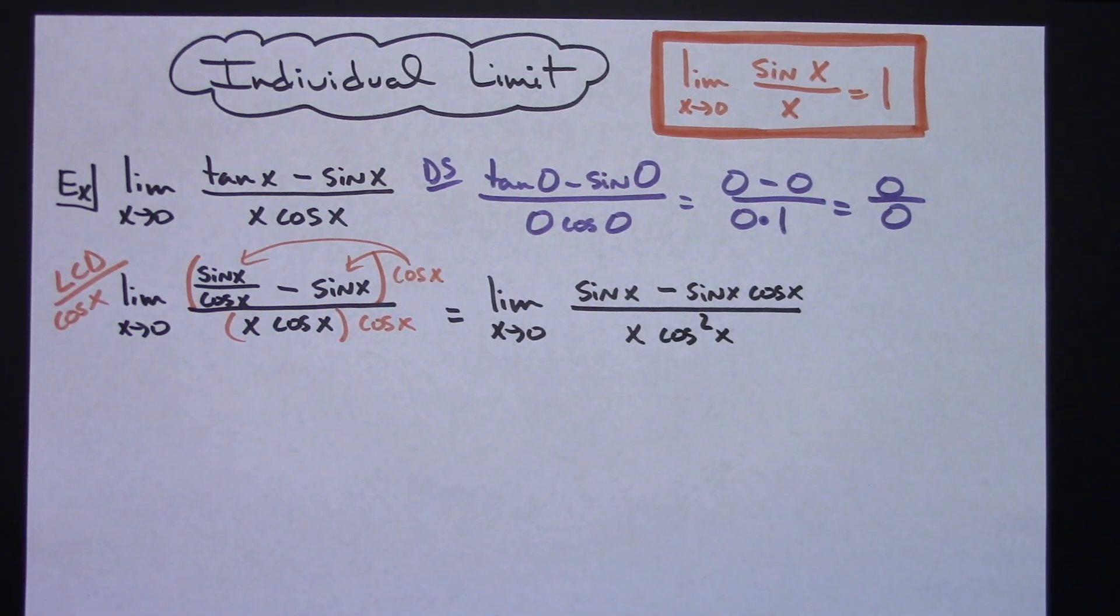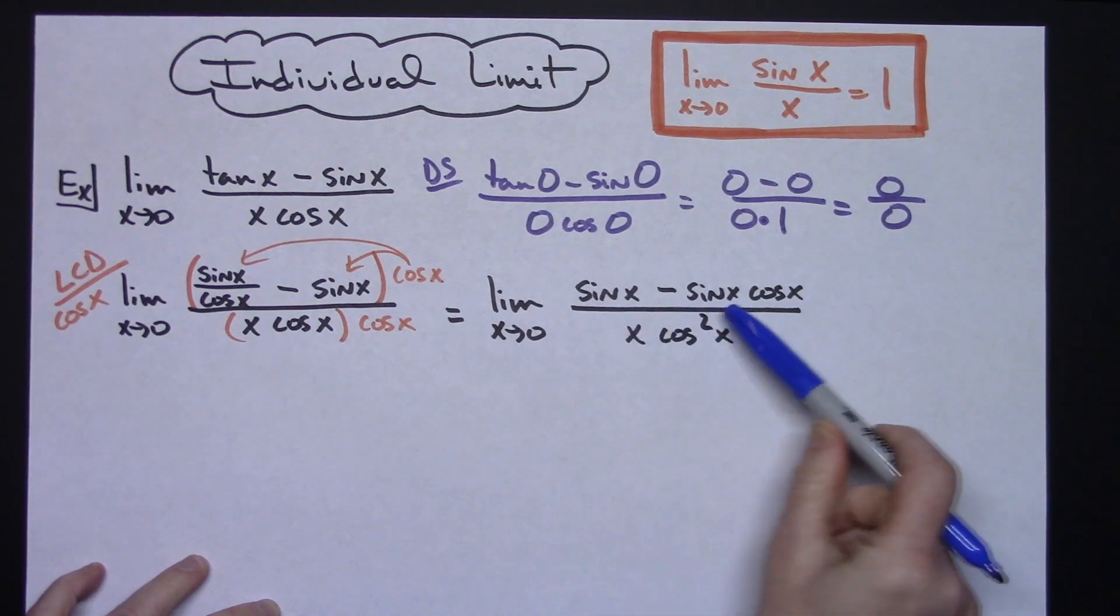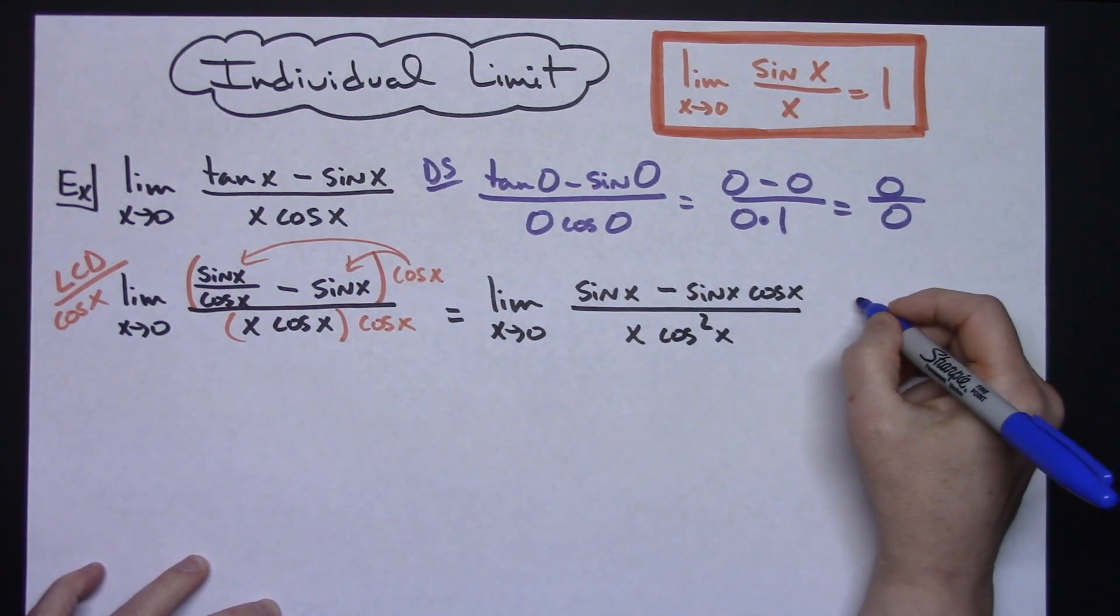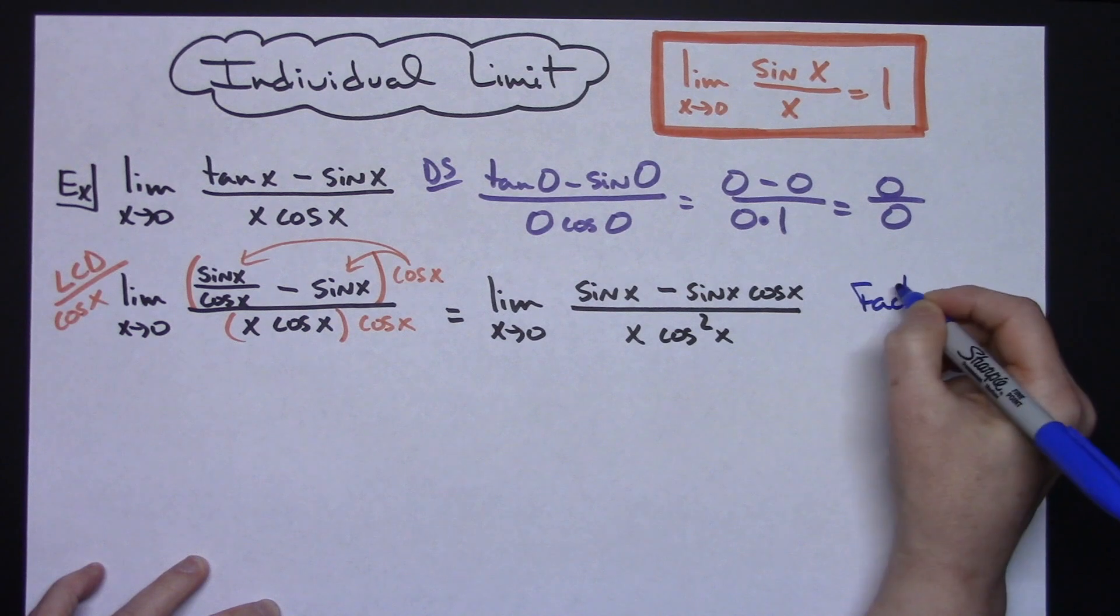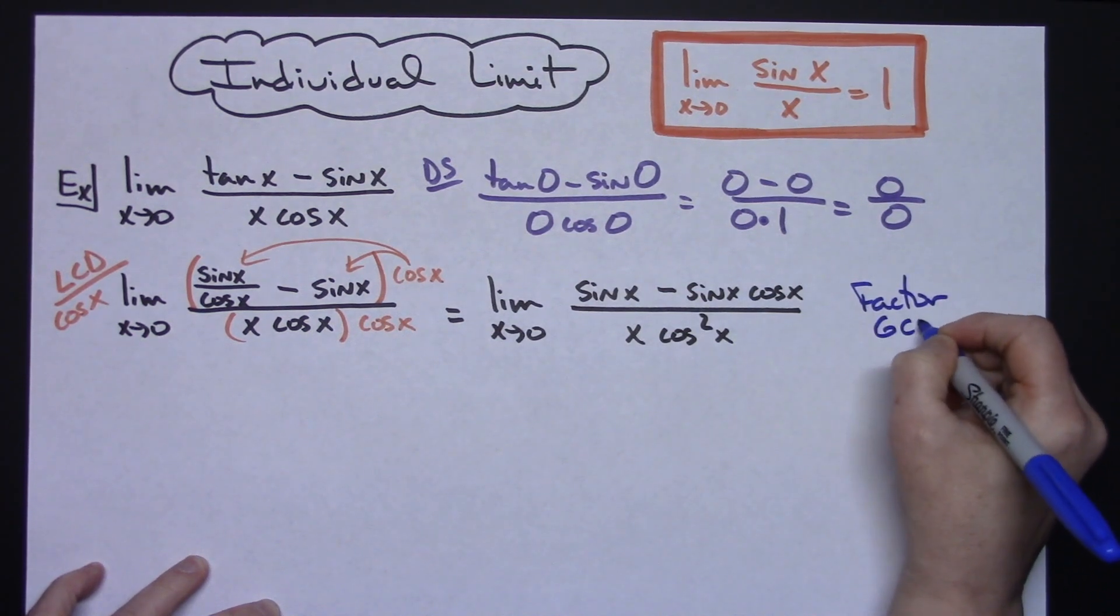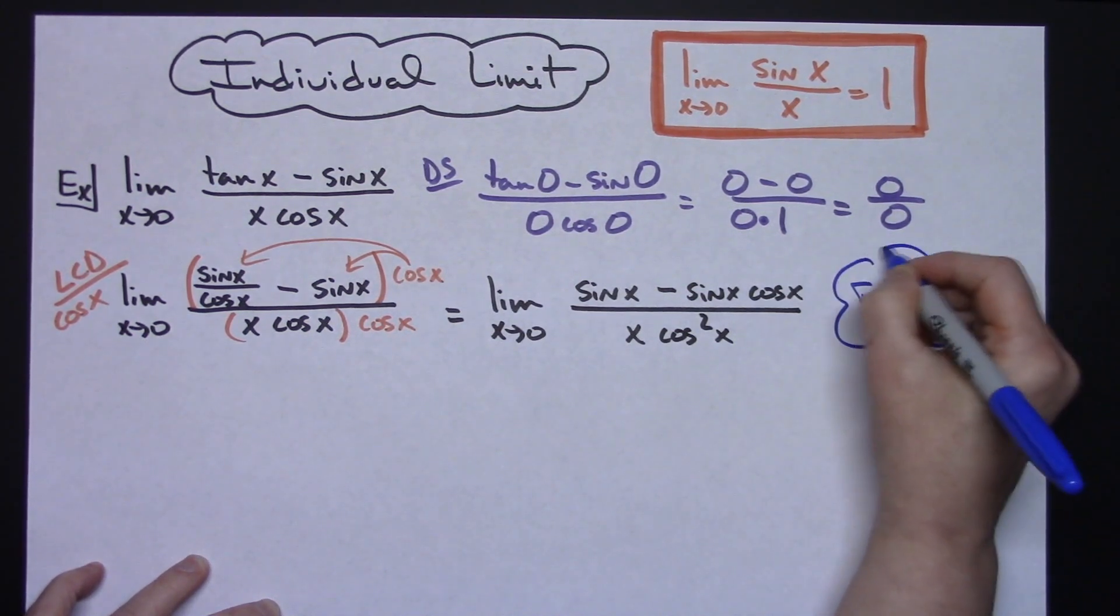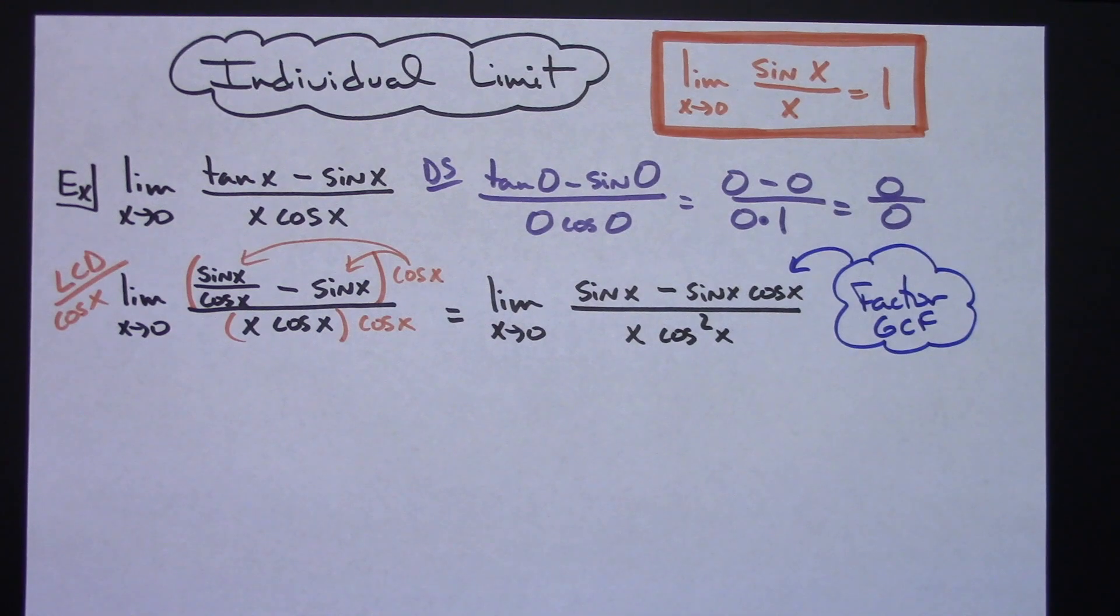Now I'm going to look at that numerator and see I've got two terms with a greatest common factor of sin(x). At this point let's factor the GCF, greatest common factor, out of the numerator because I think that's going to help us.